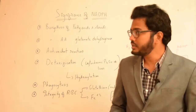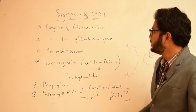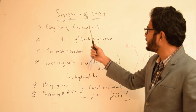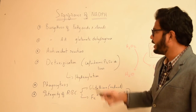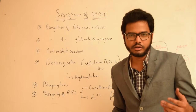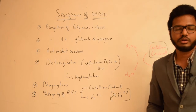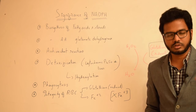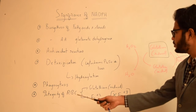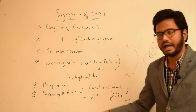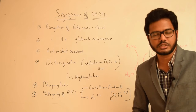To summarize: NADPH stands for nicotinamide adenosine dinucleotide phosphate. It is essential for biosynthesis of fatty acids, steroids, and amino acids involving the enzyme glutamate dehydrogenase. It is involved in antioxidant reactions — for example, conversion of hydrogen peroxide to water by glutathione in reduced state. The role of NADPH is to maintain glutathione in its reduced state, which in turn maintains the integrity of RBCs.